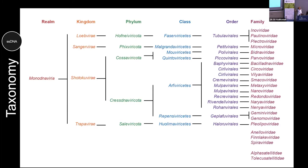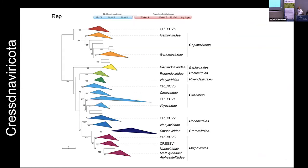At the family level, there are some viral-like elements that are not assigned to any orders. They're kind of free-floating at the moment because we're beginning to discover these new things and trying to figure out where they belong.